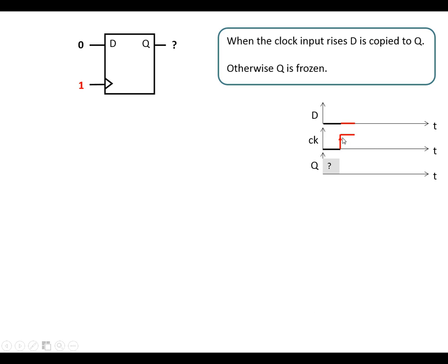If we make the clock input rise — we can label the rising edge here with an arrow — D is copied to Q. In this case, the 0 is copied across. It doesn't matter if the D input changes, Q is going to stay the same. And if we make the clock input fall again there's no change at Q. It's only when the clock input rises.